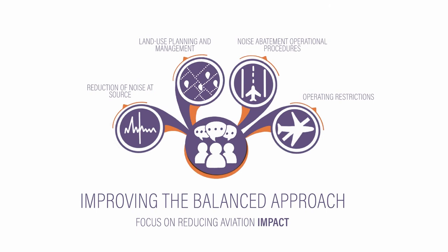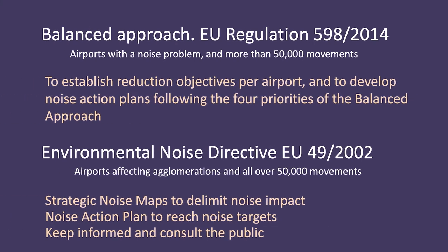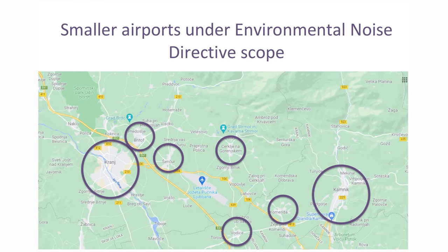The Balanced Approach regulation requires member state authorities to ensure that airports with a noise problem and more than 50,000 movements establish noise reduction objectives and develop noise action plans following the four priorities. Furthermore, the Environmental Noise Directive defines a common approach to avoid and reduce harmful effects of environmental noise exposure. It requires states to define noise objectives and limits, and obliges airports affecting agglomerations with over 15,000 movements to prepare strategic noise maps, develop action plans to reach established objectives, and consult the public during these processes. Smaller airports should also be included under the regulatory framework.